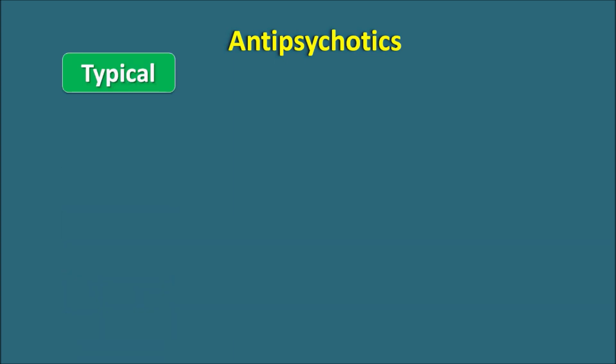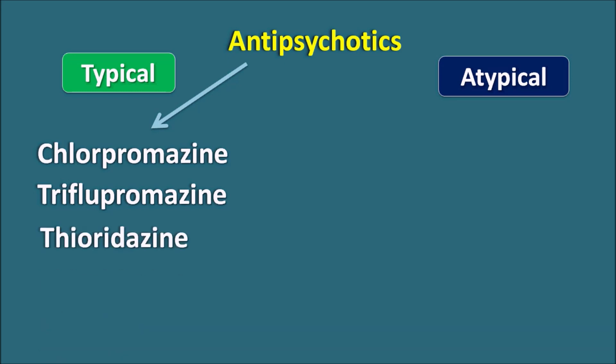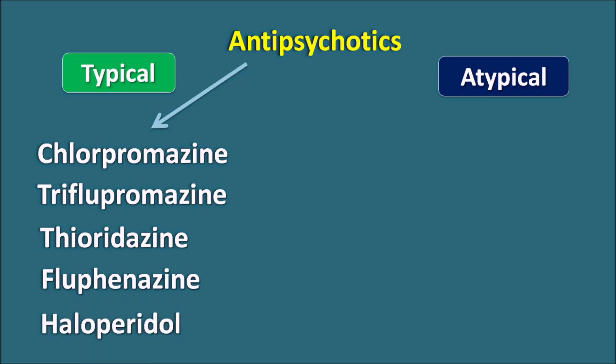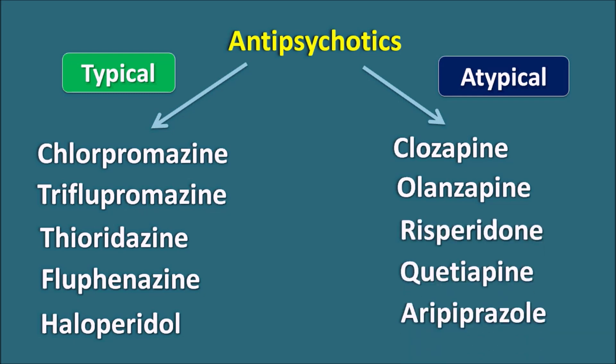Antipsychotics can be classified into two categories: typical antipsychotics, which are the old generation, and atypical antipsychotics, which are the new generation. Within the typical category we have drugs like chlorpromazine, triflupromazine (phenothiazines), thioridazine, fluphenazine, and haloperidol. Within the atypical category we have clozapine, olanzapine, risperidone, quetiapine, and aripiprazole.